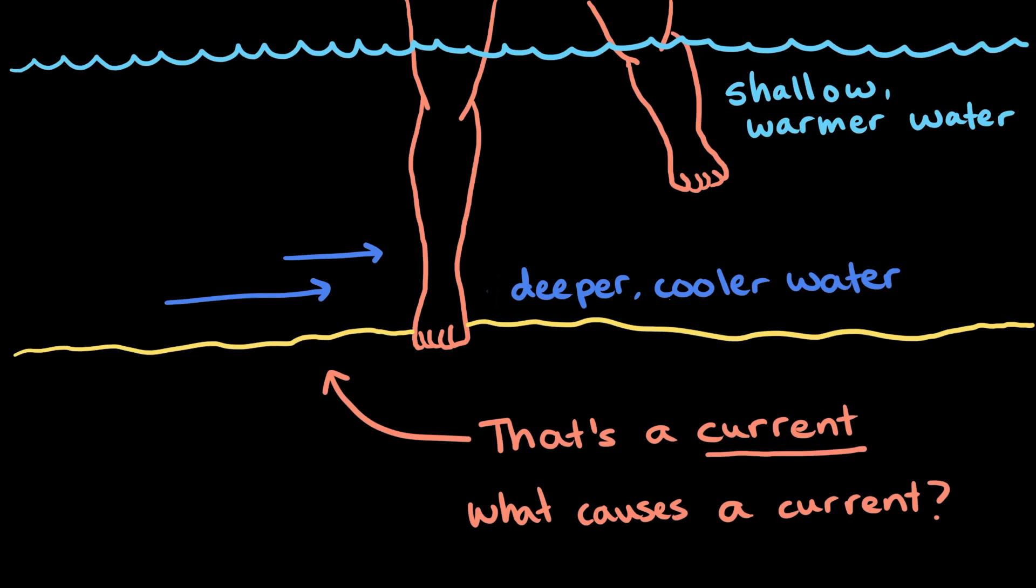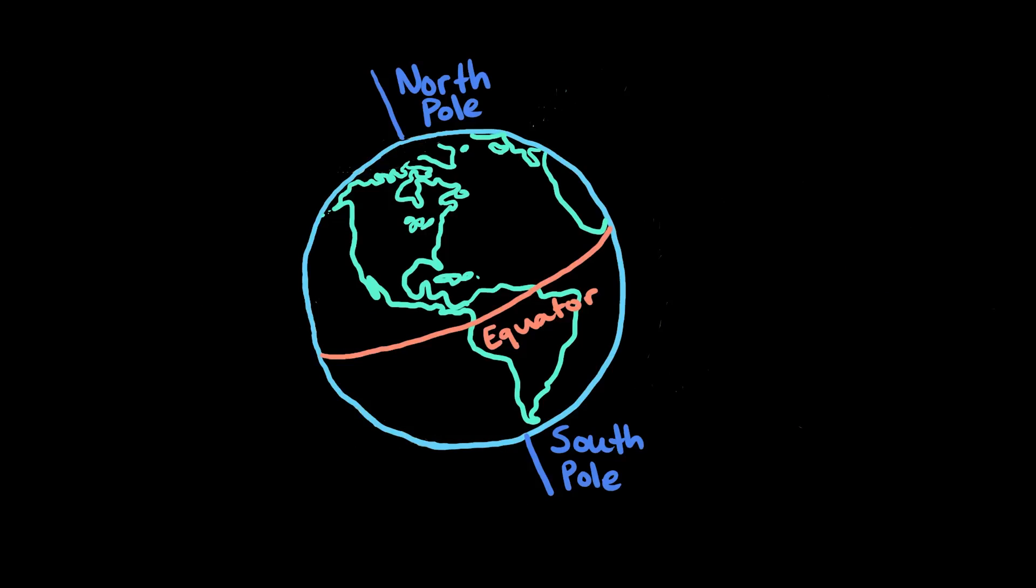But what causes a current? Well, let's start with the sun. The sun actually heats Earth unevenly. We know that it's hotter near the equator and it gets colder as you go towards the poles.